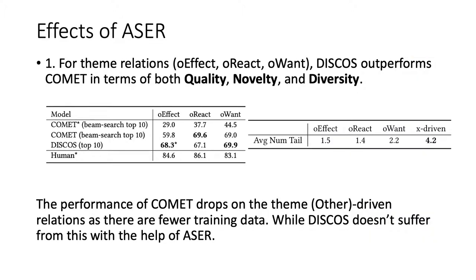We can also discuss the effects of Acer. For the other-person-driven relations — OEffect, OReact, and OWant — Discourse outperforms or is comparable with COMET in terms of quality, novelty, and diversity. This is because general generation models require sufficient training data, and for those other-person-based relations, the average number of tails per head is much smaller than X-based relationships. Discourse doesn't suffer from this problem, as Acer can inherently provide many extra neighbors.